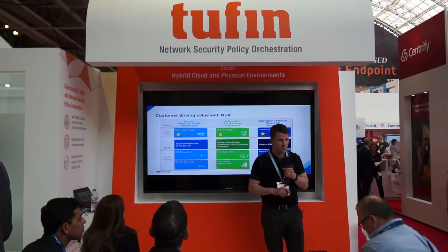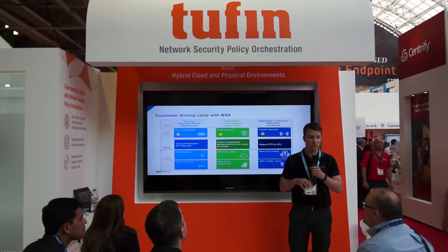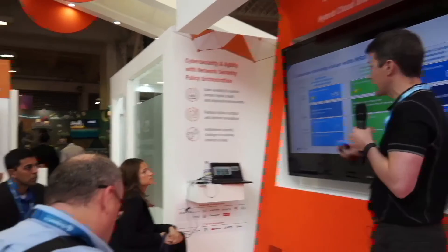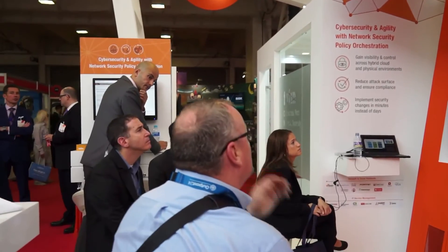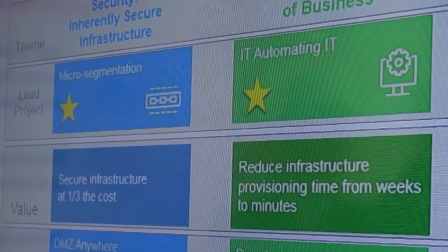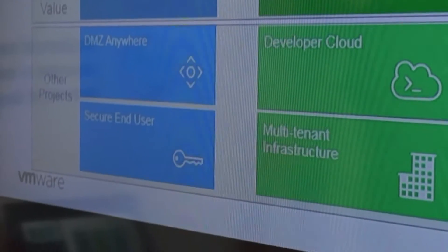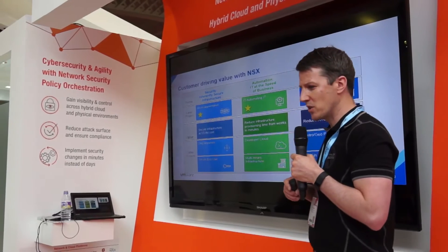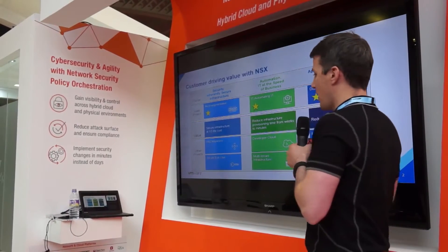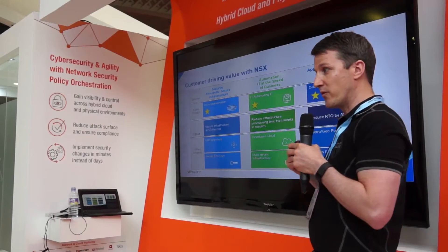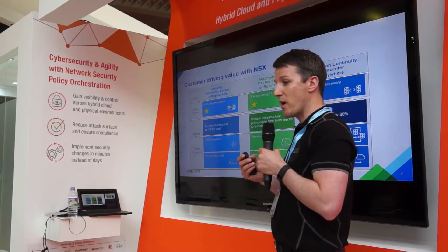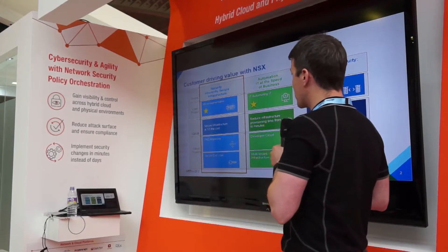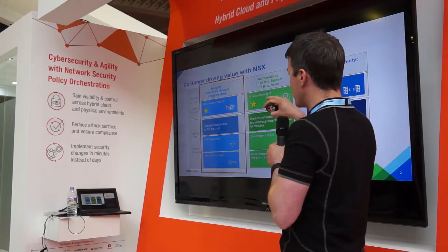When talking to customers we have three main pillars of use cases. We talk to them about security, which we'll focus on today, but also automation — how we can speed up the delivery of workloads and applications to meet the requirements of the line of business — but also about application continuity, deploying workloads independently of the physical location, whether on-prem, a hybrid cloud model, or even into the public cloud. Today we're going to focus on the main use case around security.